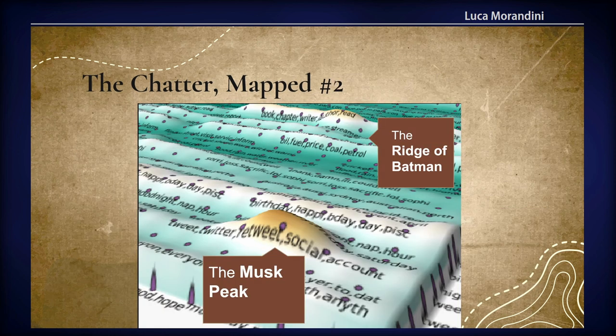If you look at the beginning of March, you can see this peak — we call it the Musk peak — because Musk tweeted about his buying of Twitter. You can see 'tweet, tweet, tweet,' that topic — social media — at the bump of popularity. And you can see over there the ridge of Batman.